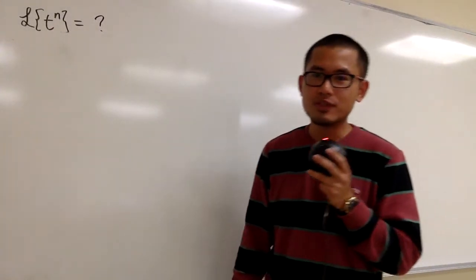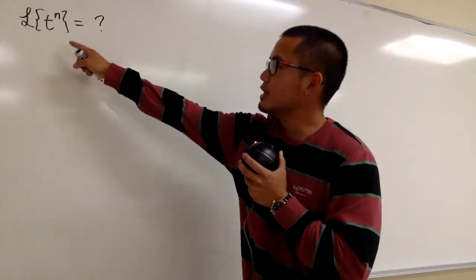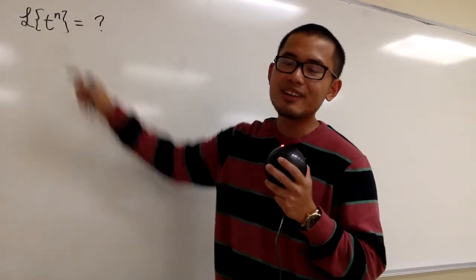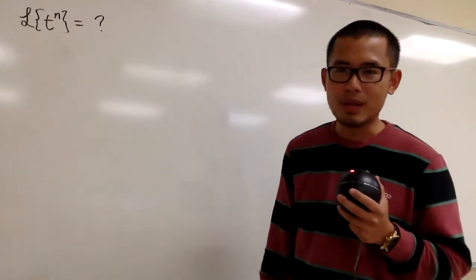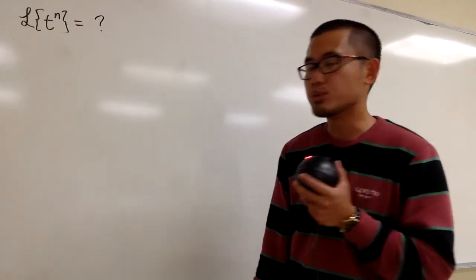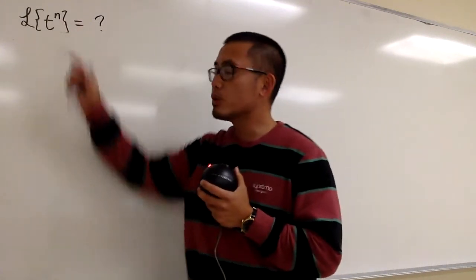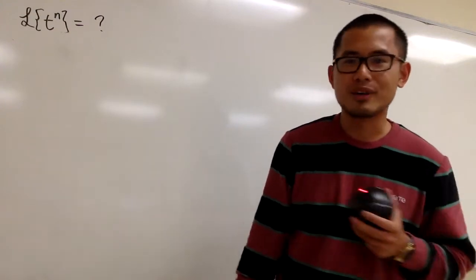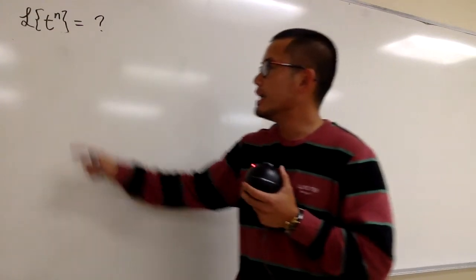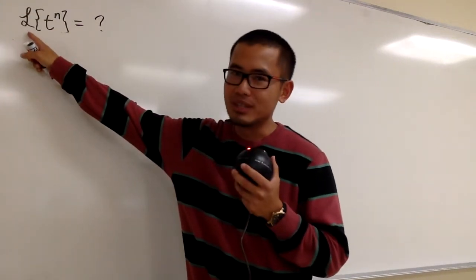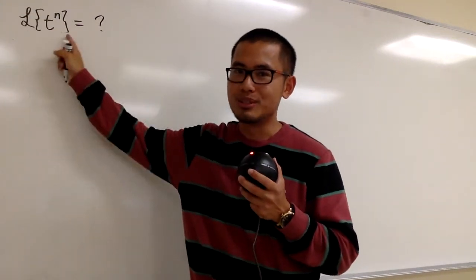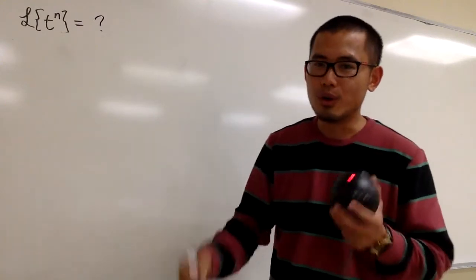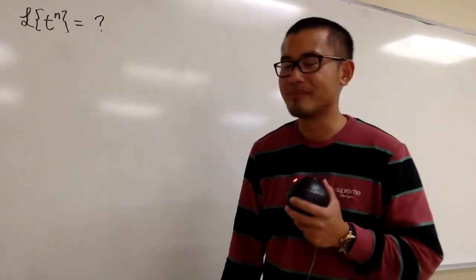We are going to figure out the Laplace transform of the function t to the nth power, where n can be any non-negative whole number — that means n can be 0, 1, 2, 3, 4, and so on. In this video, I'm not going to use the definition of Laplace to do this. You can try it, it will work, but I will show you another way.